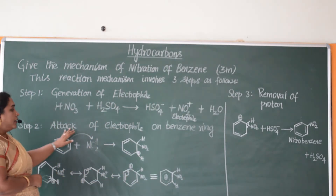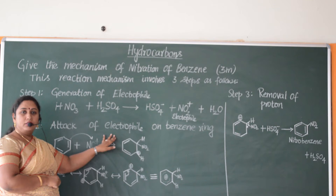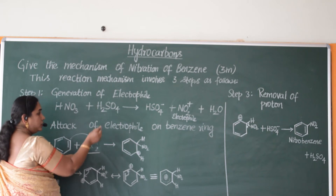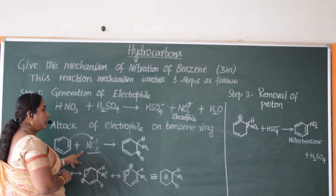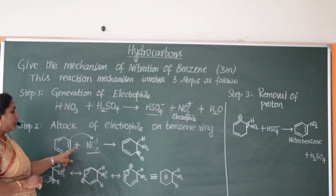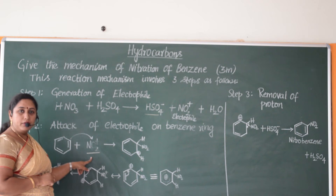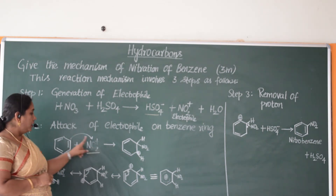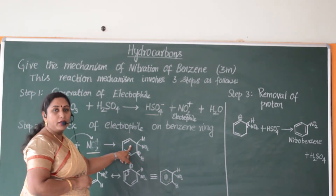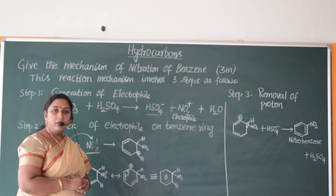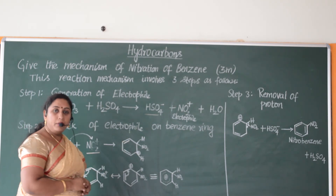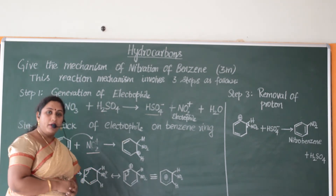In the next step, attack of the electrophile takes place on the benzene ring. The electrophile generated in step 1, that is NO2⁺, is going to attack the benzene ring. This results in the formation of a carbocation — a positively charged carbon center on the benzene ring, which we also call the arenium ion.